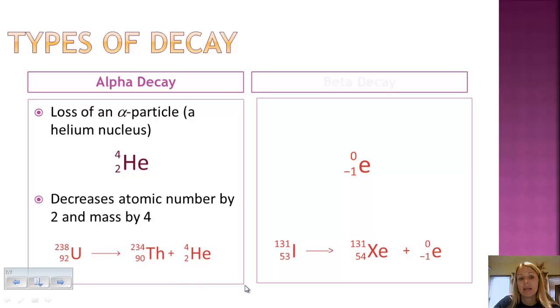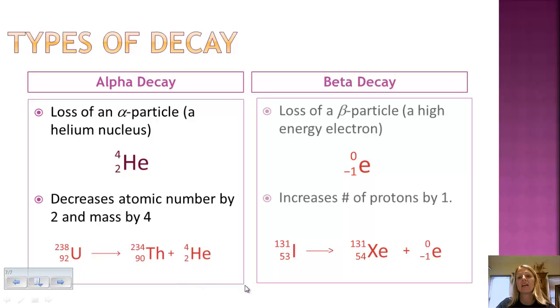Leading us to beta. Beta decay is the loss of an electron. And we have this symbol represented here with the e representing the electron, 0 as the mass, negative 1 as the charge. So that's how it's going to change the atomic number. So what you're going to know when it goes under radioactive decay, the element's number of protons or the atomic number is going to increase by 1.